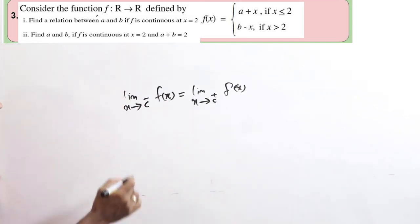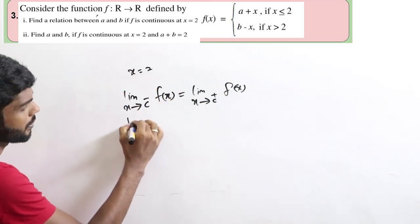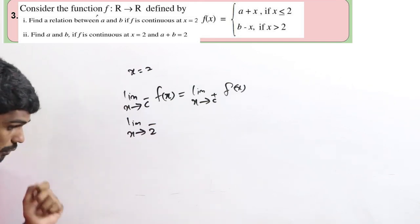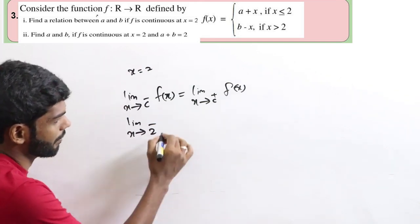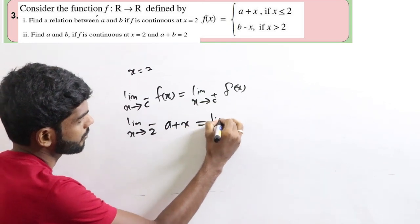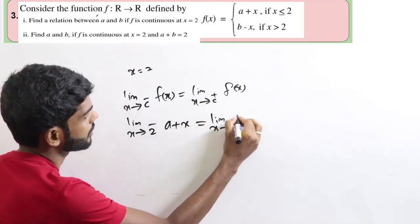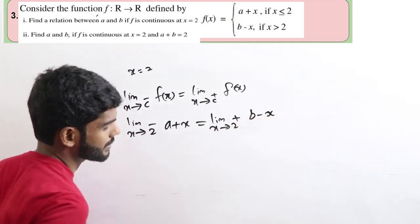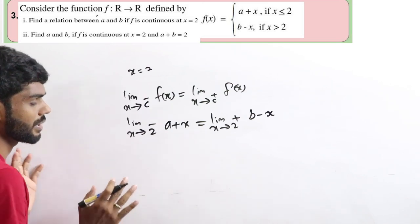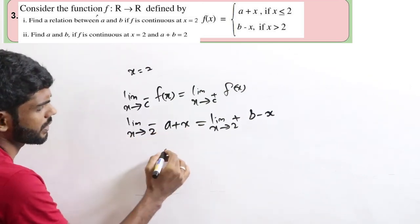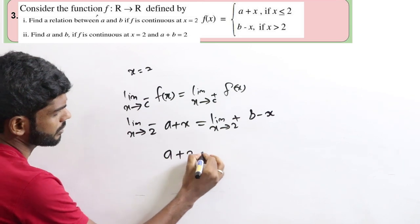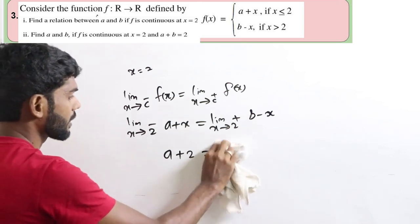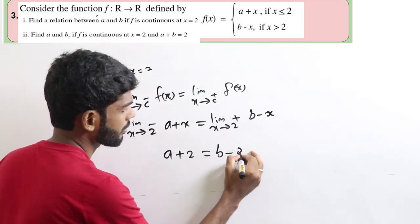We have x equal to 2. Limit x tends to 2 minus: since x is less than or equal to 2, we use f of x equals a plus x. This equals limit x tends to 2 plus: since x is greater than 2, we use f of x equals b minus x. Substituting x equals 2: a plus 2 equals b minus 2.